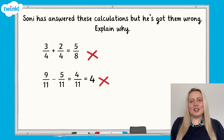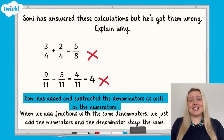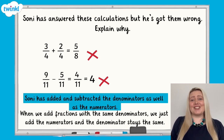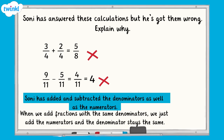How did you get on? Sonny's answers were incorrect because he added and subtracted the denominators as well as the numerators in the fractions. For three-quarters add two-quarters, he only needed to add the numerators — three and two — which equals five. The denominator, four, needed to remain the same. So three-quarters add two-quarters equals five-quarters, which is equal to one and one-quarter.